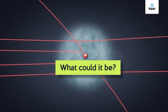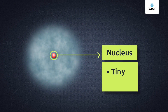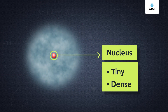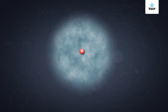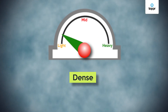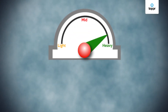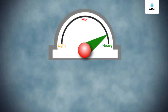What could it be? This thing is called the nucleus. The nucleus is a tiny and dense body that is present in the center of the atom. As it is tiny, it occupies very little space, but as it is dense, it is heavy. In fact, almost the entire mass of the atom resides in the nucleus.